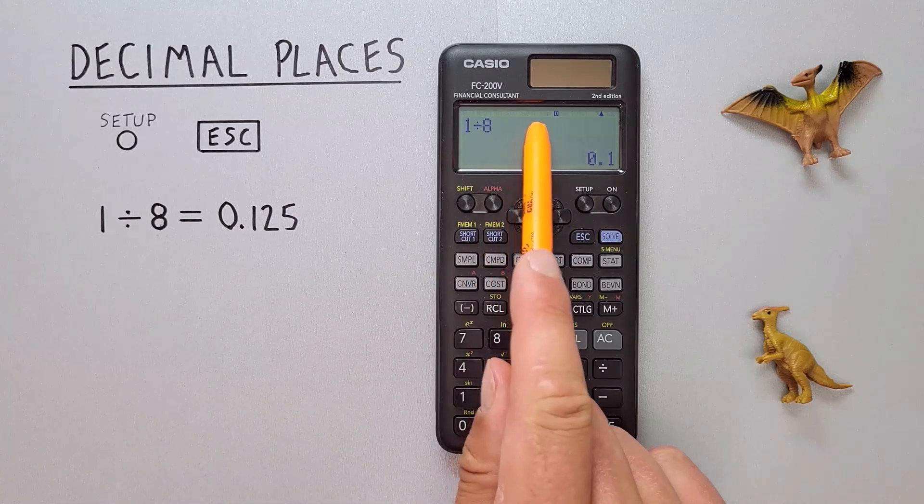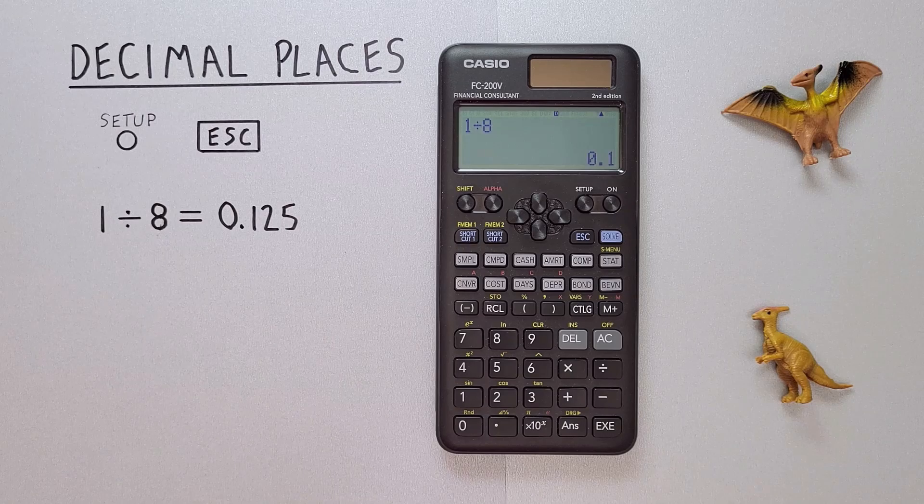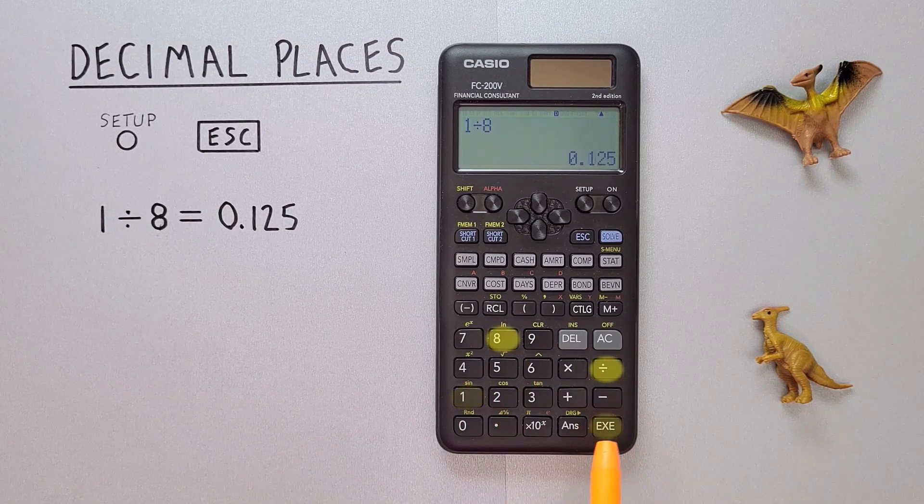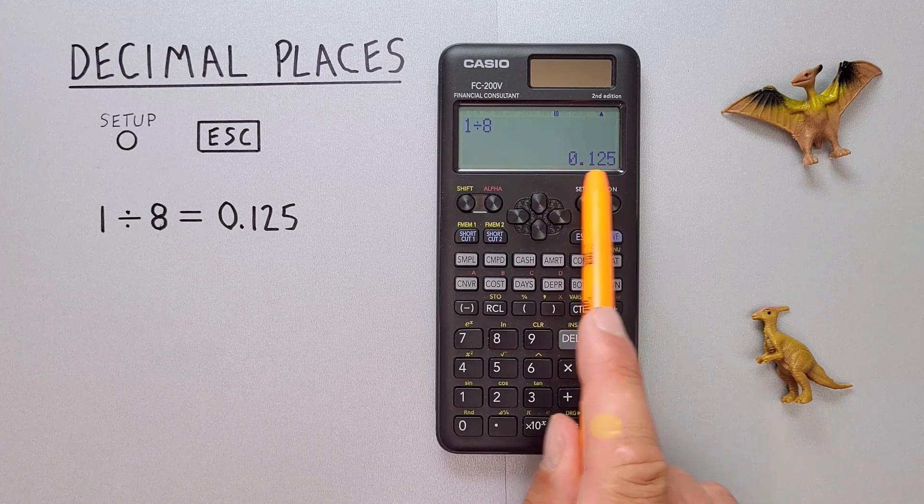We see the word Fix is no longer at the top of our screen. And if we go 1 divided by 8, we get all our decimals in the answer.